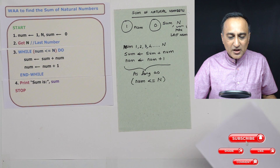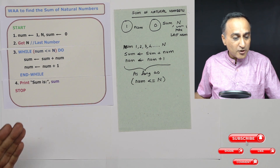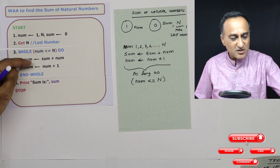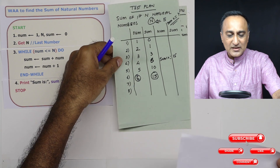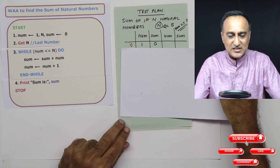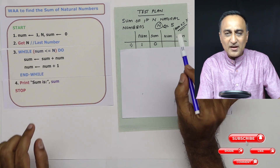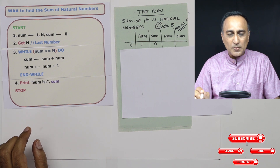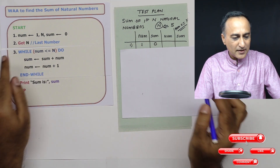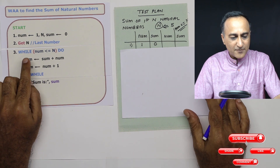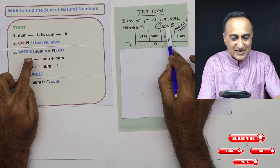We cannot trust our logic without running a test plan, because it will all look great on paper. But if by mistake you had exchanged these two steps, you would get a completely different answer. To see how this works, let us run through a test plan. I'm going to assume n equals 5 — finding the sum of 1 plus 2 plus 3 plus 4 plus 5. Number is 1, sum is 0. Get n — n is going to be 5. I continue as long as number is less than or equal to 5.